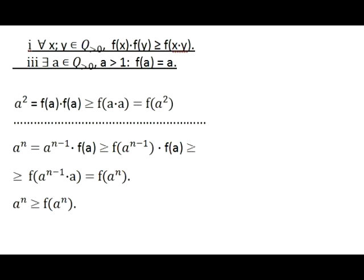Now we examine the case when the value of F is not greater than the value of its argument. This is true for all powers of A. It follows from conditions 1 and 3. By elementary algebra we obtain this inequality for A squared: A squared is not less than F of A squared. The method of mathematical induction then proves this for any natural number N: A to the N is not less than F of A to the N.